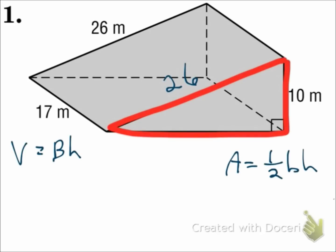So that will go in for the base of the triangle. Half of 24 times the height, which is 10, and that's 120 meters squared. That will substitute in for big B.